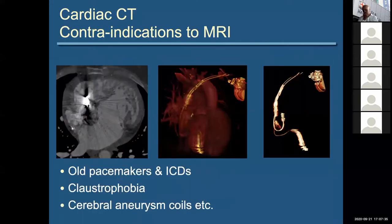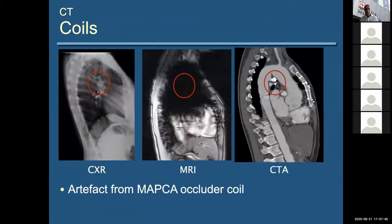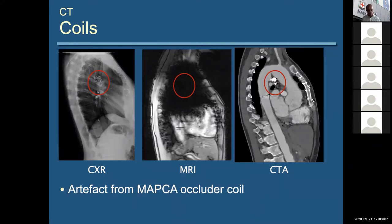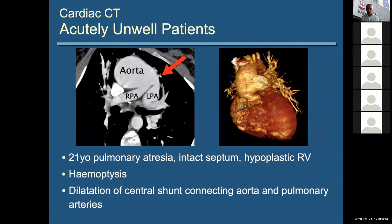What about cardiac CT? Typically MRI is the first go-to test, but there are lots of people with contraindications to MRI. Even if implantable devices are MRI compatible, sometimes they throw a lot of artefact. For example, here's a patient with a NAPCA occluder coil which leaves a dirty great black hole on the MRI picture that you can see very nicely on CT. That also goes for conditional pacemakers. If a patient's acutely unwell, an MRI scan is a bad place for them to be, so we tend to go for cardiac CT.